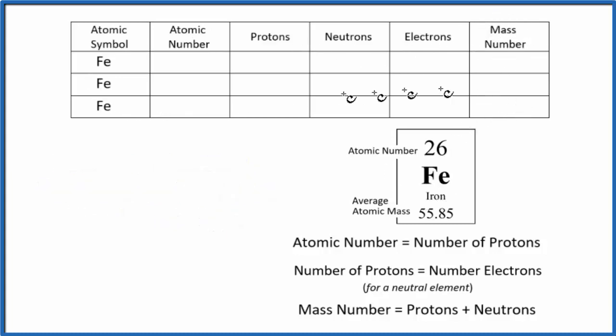Iron has three major isotopes. We'll look at each one of the isotopes as well. We'll talk more about isotopes later.